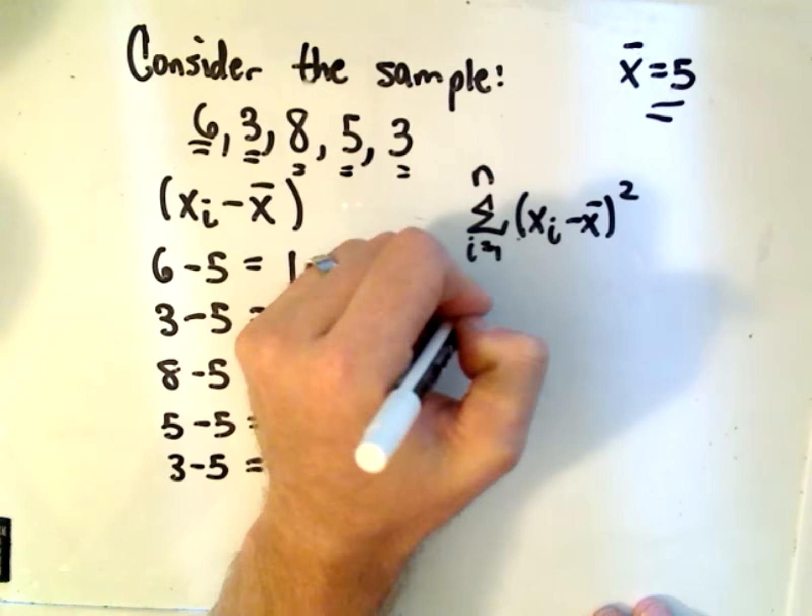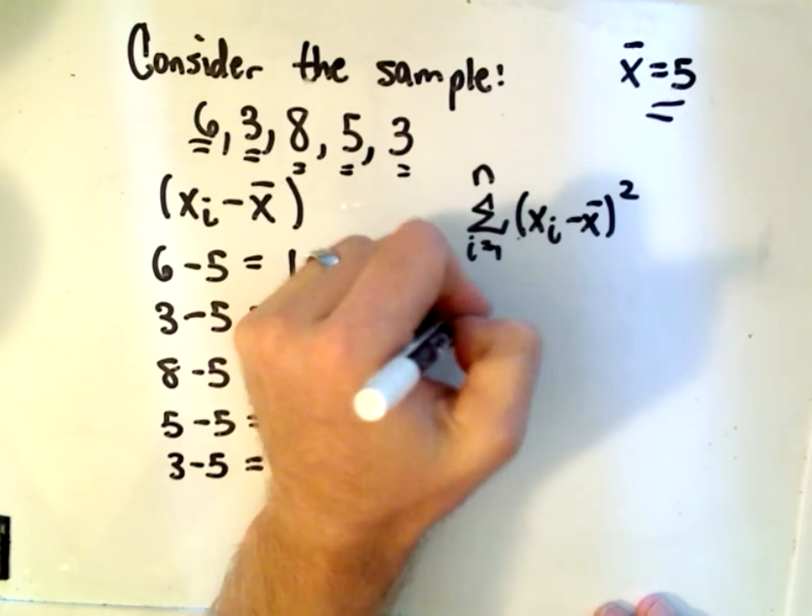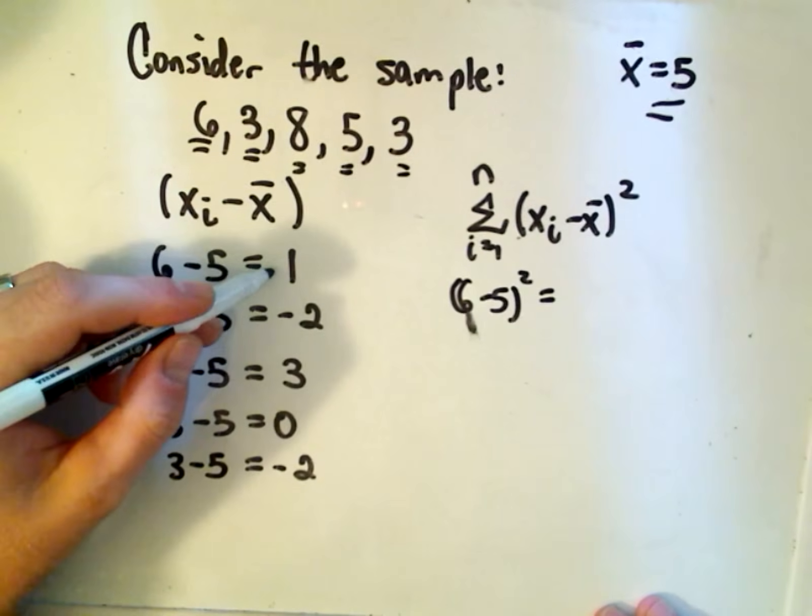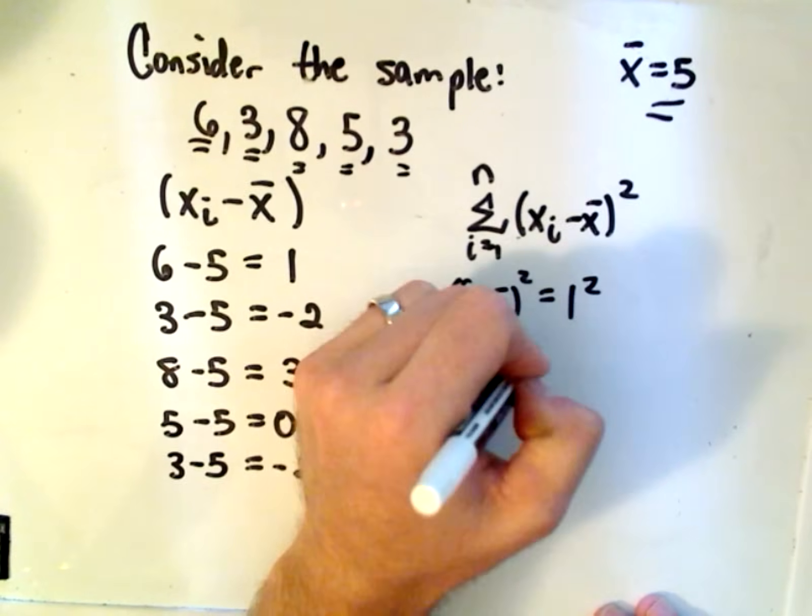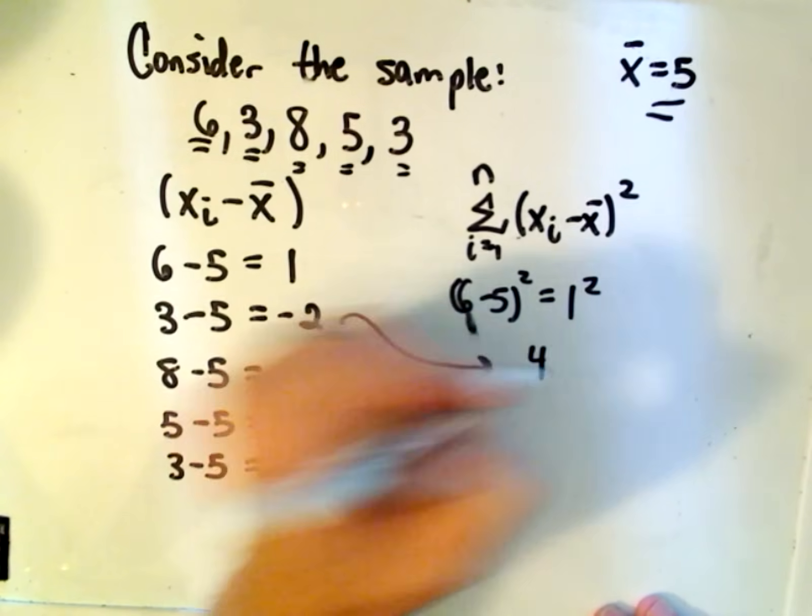So if you take 6 minus 5 squared, well, we calculated what 6 minus 5 is. It's 1. So we'll get 1 squared. Likewise, the next value we get when we square it, we'll get positive 4.